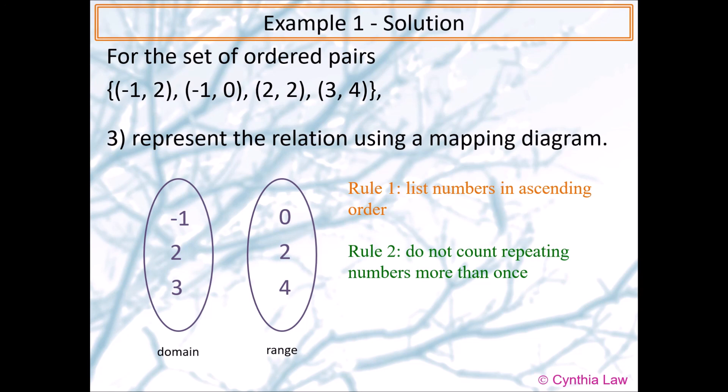Next, we write down the range. Once again, list the numbers in ascending order. And then do not repeat the same number. So we have 0, 2, and 4.